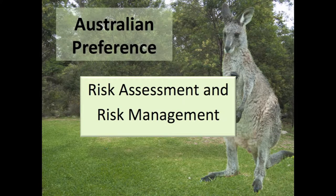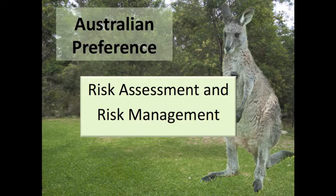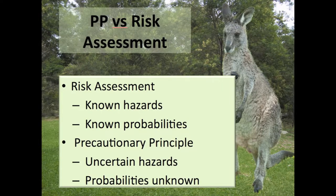In Australia, although lip service is paid to the precautionary principle when it comes to protecting the environment, generally a risk assessment and risk management approach is normally adopted. However, risk assessment is designed for situations when the dangers are known and the probabilities can be accurately assigned to them. Risk assessment is preferred because it enables proponents to assign numbers to the risks and seemingly place an objective value on them, and so compare them to the benefits.